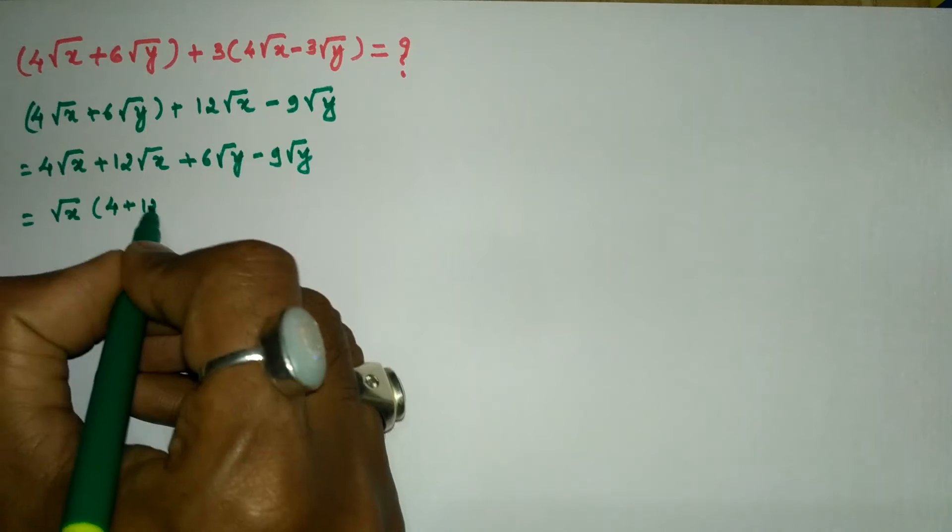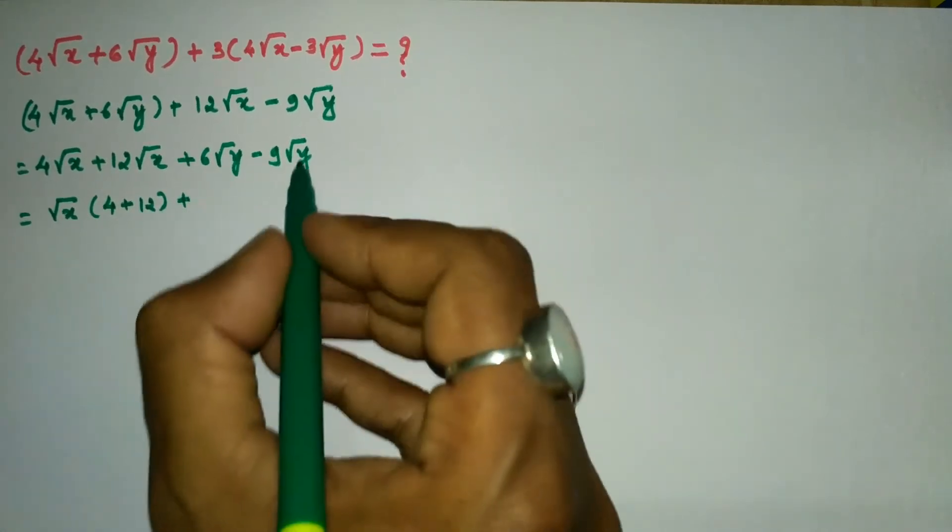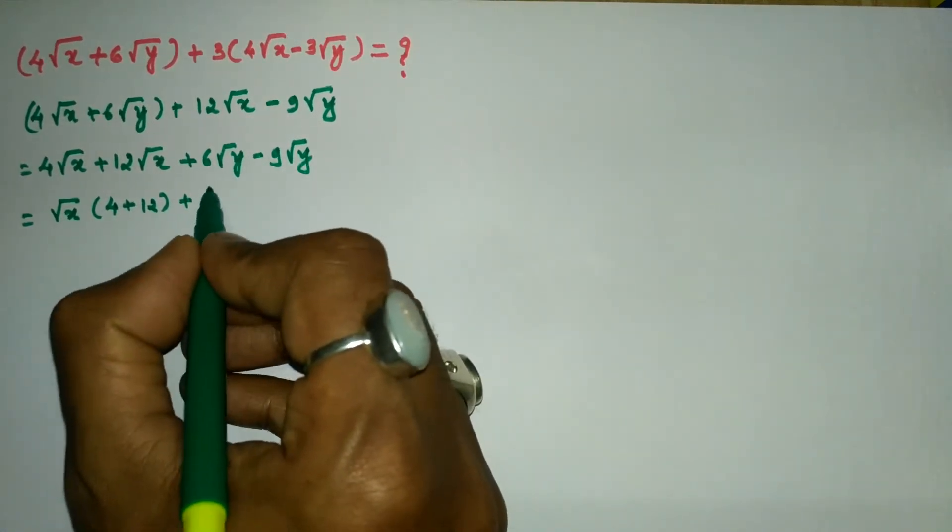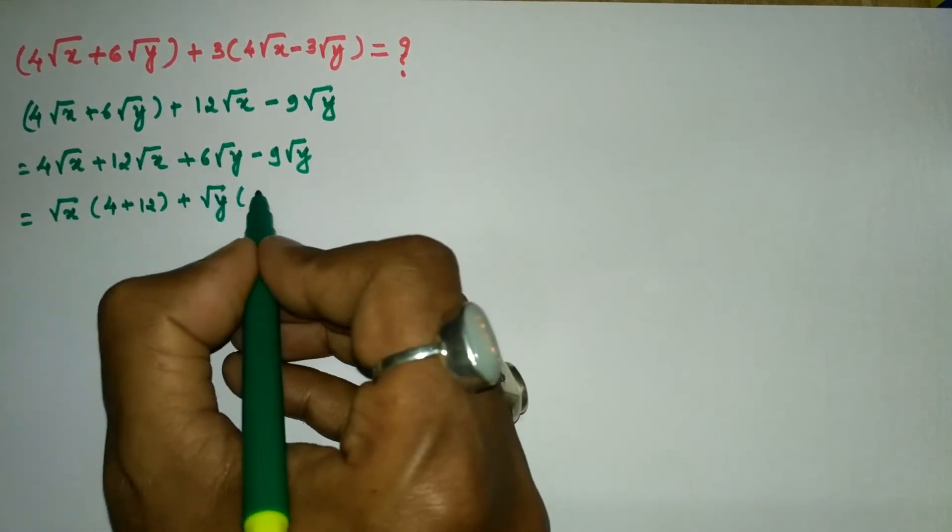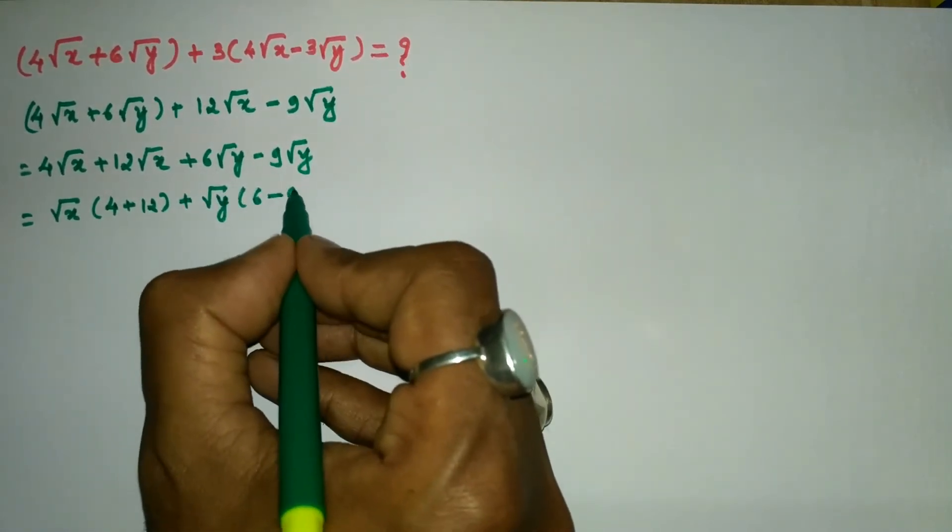Plus, here also we have √y as common, and inside the bracket we remain with 6 minus 9.